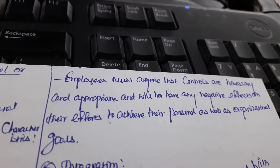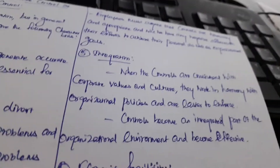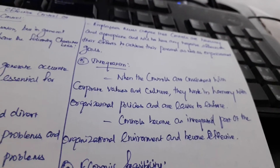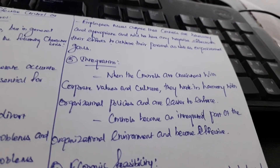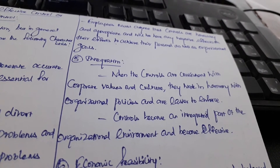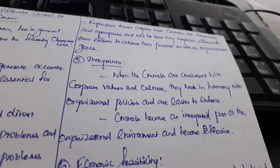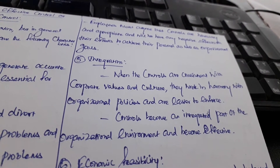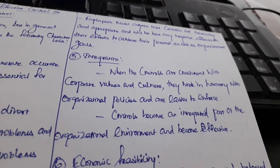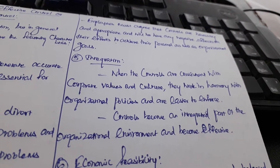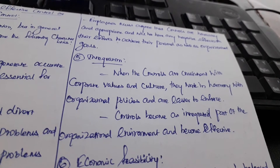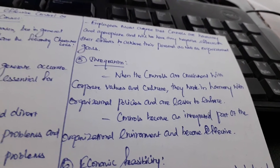Controls should have no negative effects on organizational goal attainment. Next is integration. When the controls are consistent with corporate values and culture, they work in harmony with organizational policies and are easier to enforce.